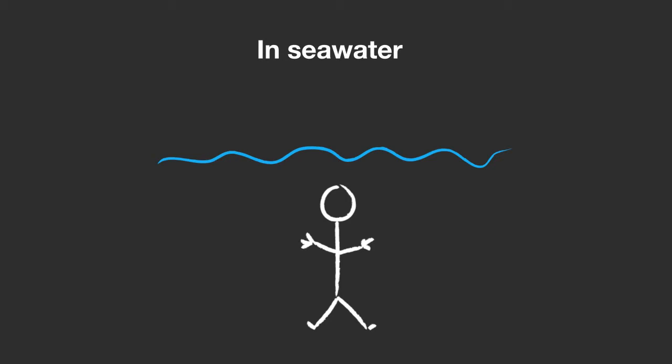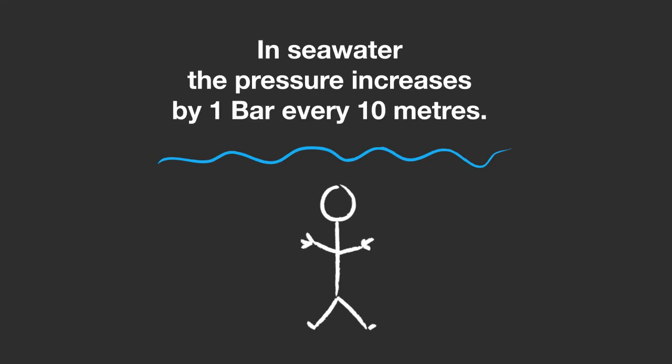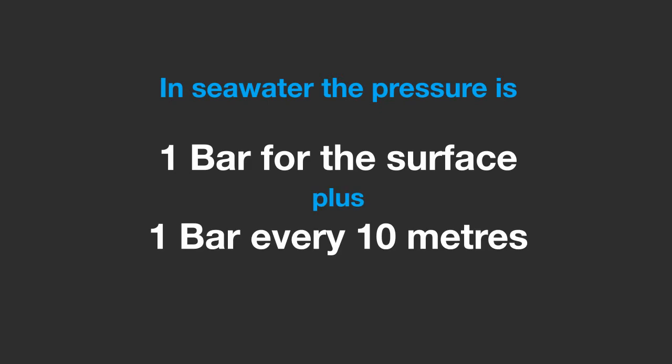In fact, in seawater the pressure increases by one bar every 10 meters. So in seawater the pressure is one bar for the surface and one bar for every 10 meters of water.